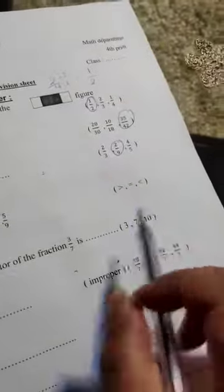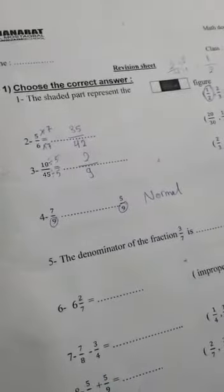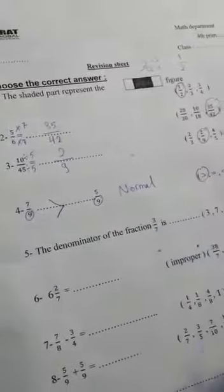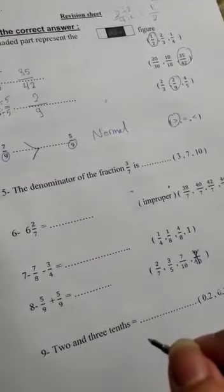Comparing fractions. I will look at the denominator: nine and nine. It will be normal fraction. What is the bigger? Seven over nine. The denominator of the fraction three over seven is what?